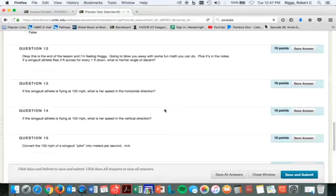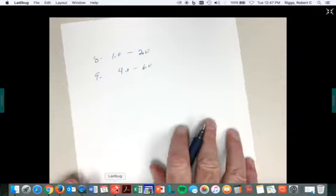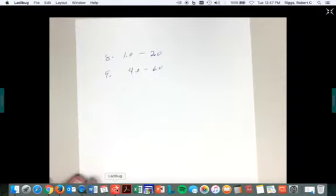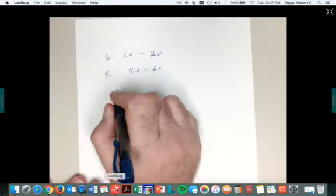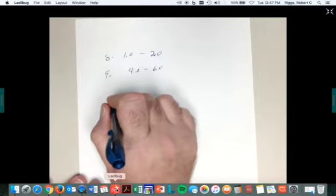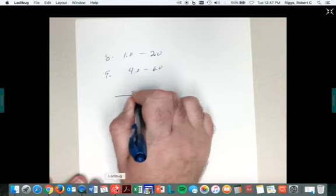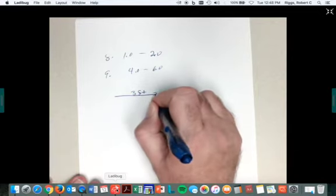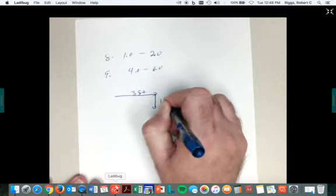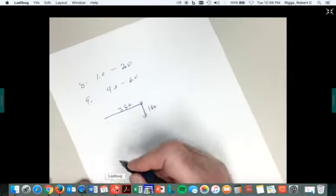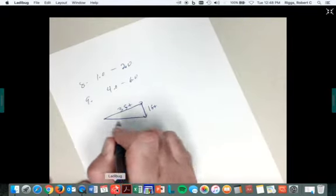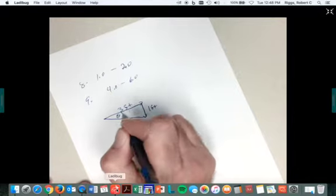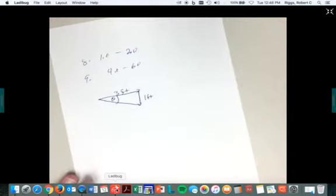So if a wingsuit athlete flies three feet for every one foot down, three feet across for every one foot down. So let's take a look at this. Now, here's how you do this. All of you have a calculator that's capable of doing this, especially if you have a phone or computer. So here you go. It goes three feet this way. And I think I said two for one earlier, didn't I? And one foot down. So we want to find this angle right here. How do we find this angle?